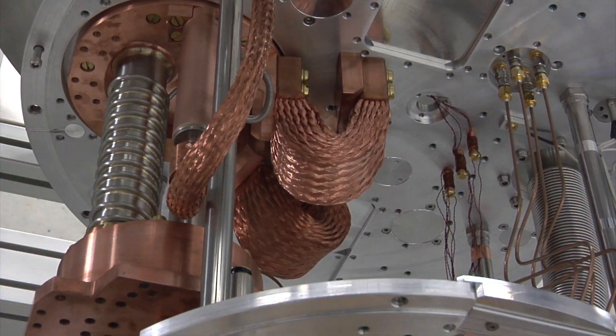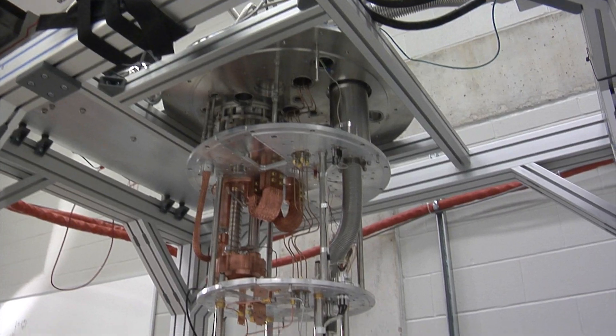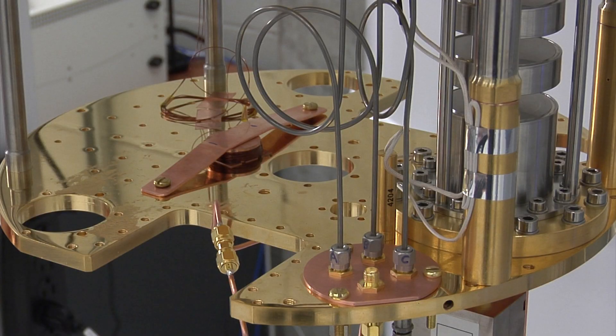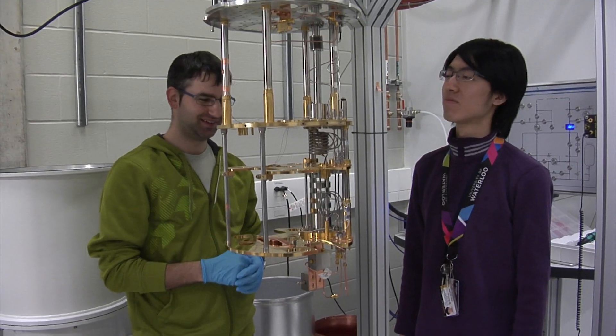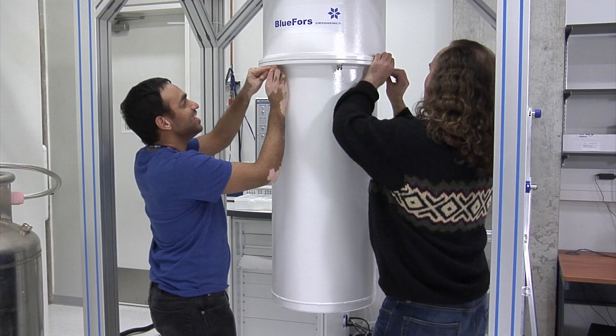So our superconducting circuits that we work with, we operate them at very low temperatures. Typically we work at 20 millikelvin, which means 20 thousandths of a degree above absolute zero. At the very low temperatures, we can actually engineer these circuits so that they behave quantum mechanically.